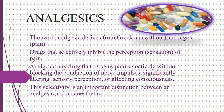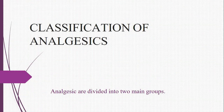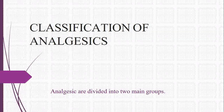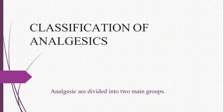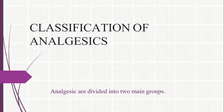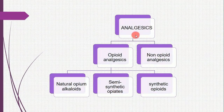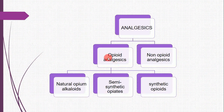That selectivity is an important distinction between an analgesic and anesthetics. The classification of analgesics: analgesics are divided into two main groups — one is opioid analgesics and the second one is non-opioid analgesics.